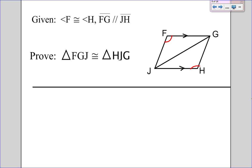So I can try the Z trick because I have a transversal cutting through both of these parallel lines. So if I highlight the parallel line, the transversal, and the other parallel line, it makes a Z, as you can see. So the angles made by the Z are angle FGJ right here and angle HJG right there.